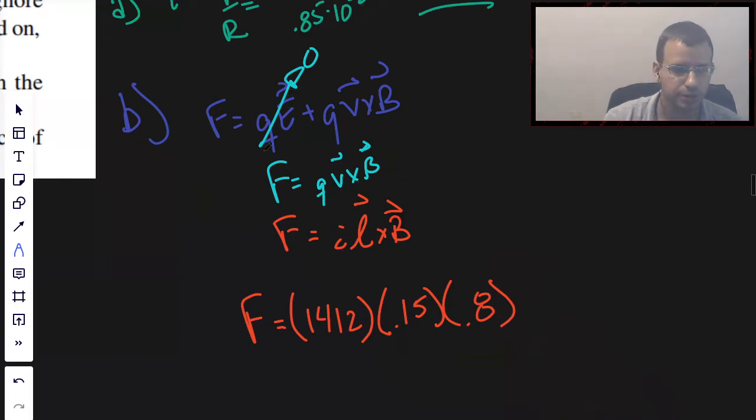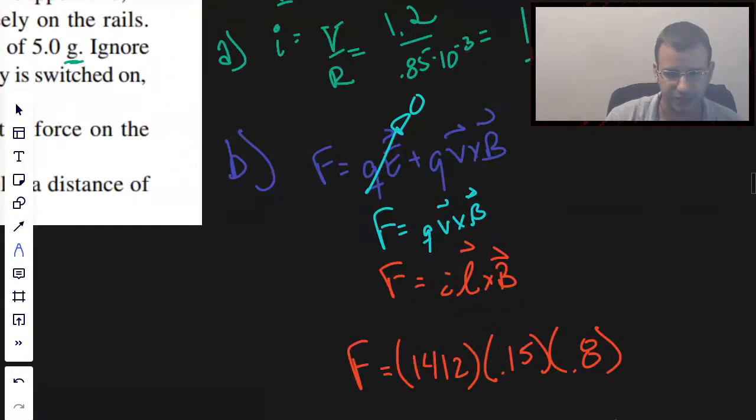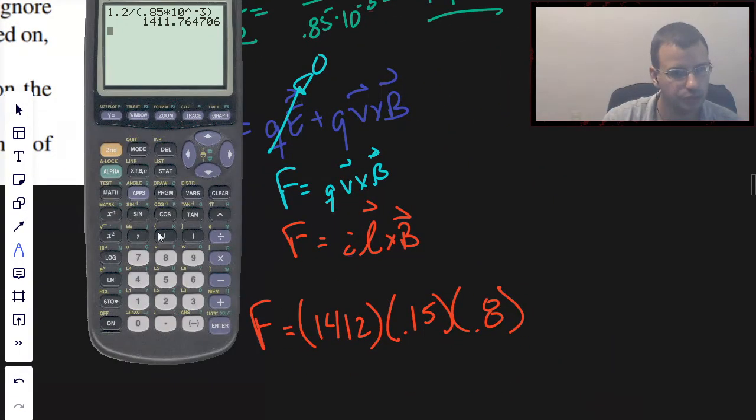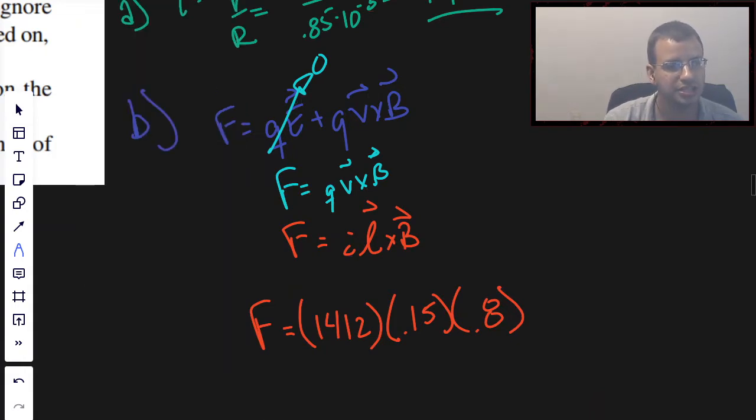Times the magnetic field, which I think is like 0.8. Check that to make sure, 0.8 teslas, that's a pretty big magnetic field. So 1412 times 0.15 times 0.8, and I get 169.